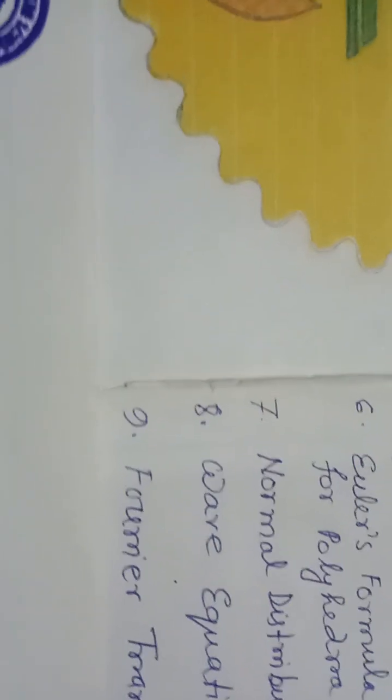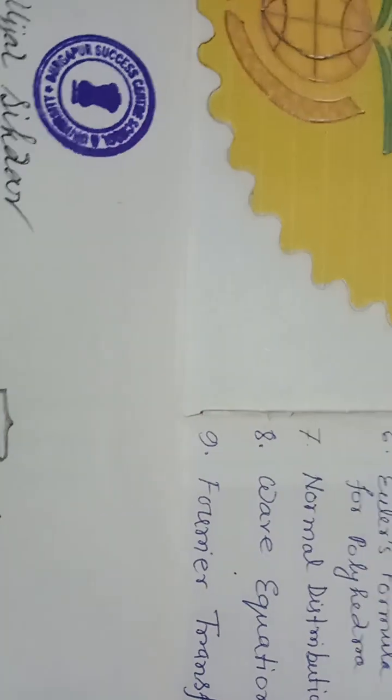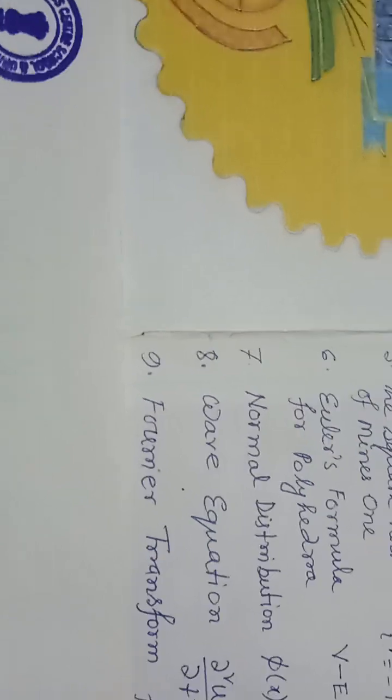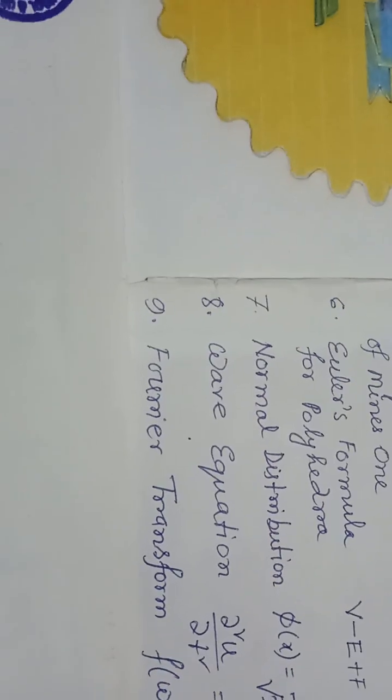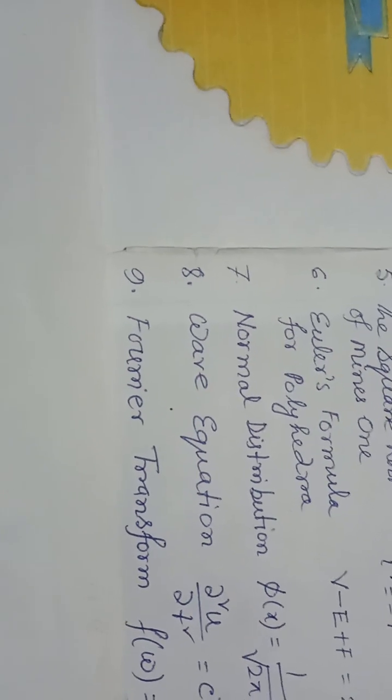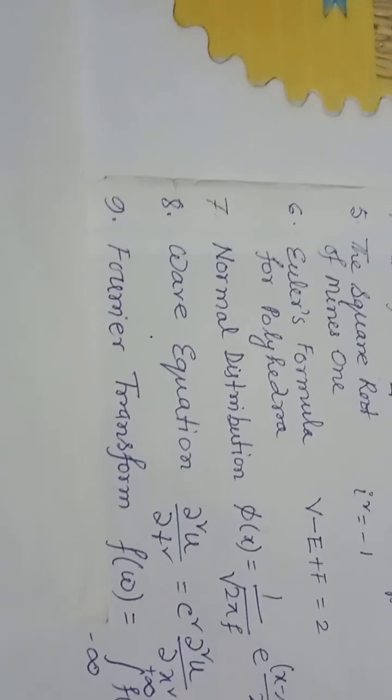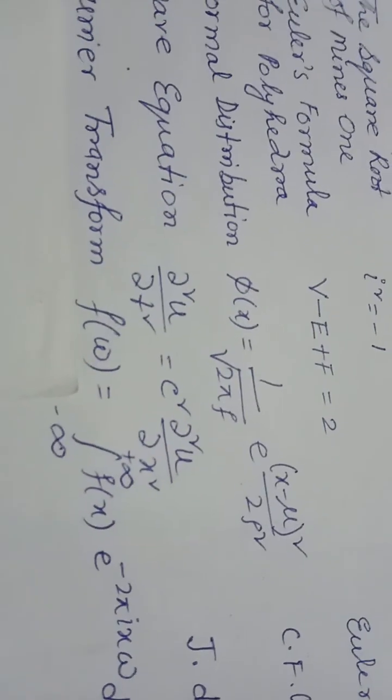Formula number 6, Euler's formula of polyhedra: V - E + F = 2. Euler, 1751. Formula number 7, normal distribution: φ(x) = (1/√(2πσ²))e^(-(x-μ)²/2σ²). C.F. Gauss, 1810.